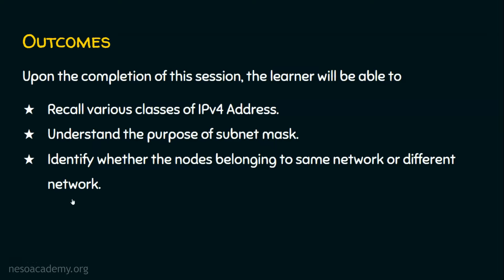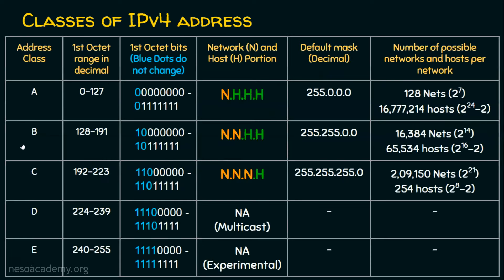Let's recall the various classes of IPv4 address. There are five classes: class A, B, C, D, and E. IPv4 addresses have four octets. If the first octet is between 0 and 127, it is class A. Between 128 and 191 is class B. Between 192 and 223 is class C. Between 224 and 239 is class D — multicast addresses. And if the first octet is between 240 and 255, it is class E, which is for experimental and research purposes.